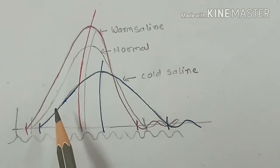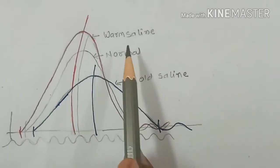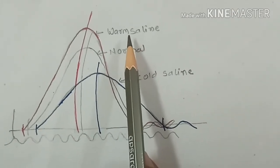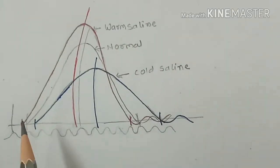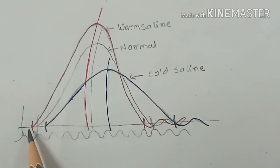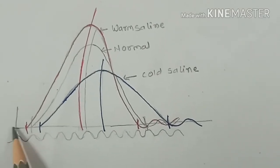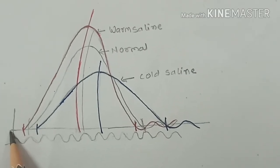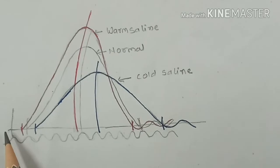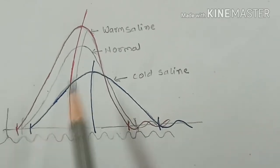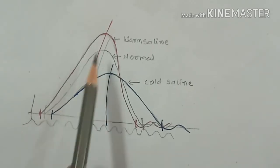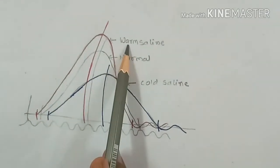Then immerse the muscle in warm ringer solution for about 2 to 5 minutes, and use same baseline, same point of stimulus, and same strength of stimulus. Record the effect of warm ringer solution on the simple muscle curve. This is the graph we can get with warm ringer solution.